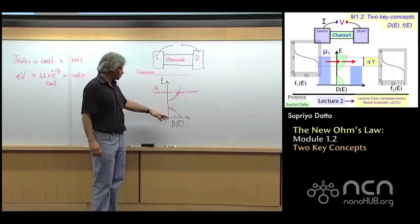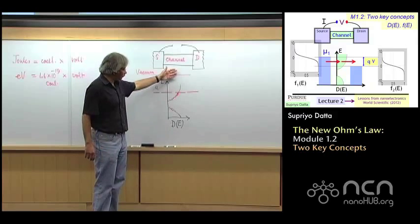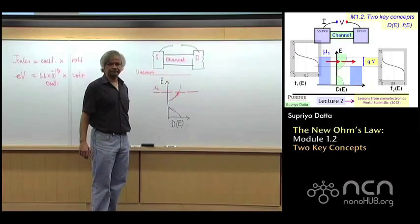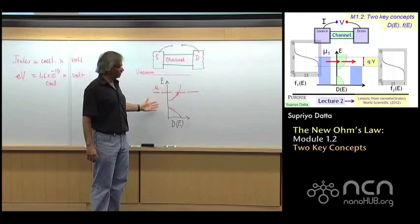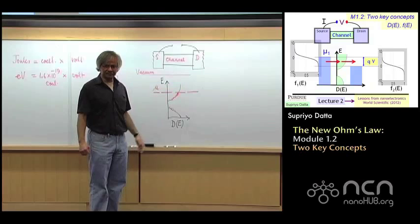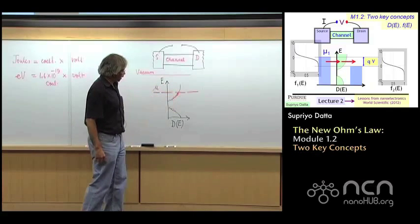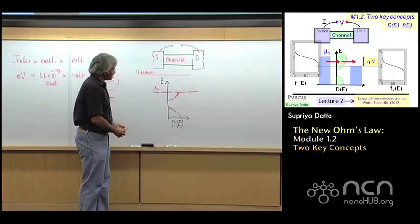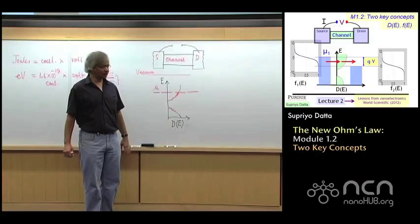And in this course, we really won't be talking about the models very much. We'll assume that, well, from various sources, we know what the density of states is for this channel. And then the question is, how do I calculate the current flow? How do I estimate the resistance, et cetera? So that's the first concept we wanted to get across, the idea of a density of states.